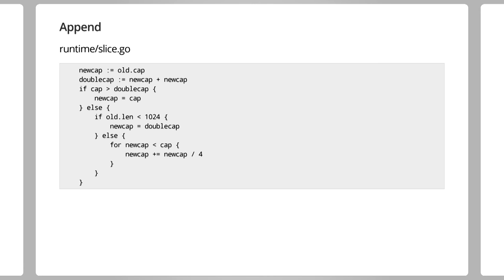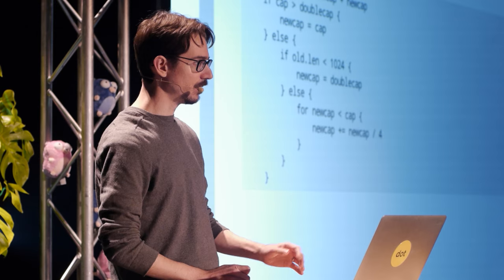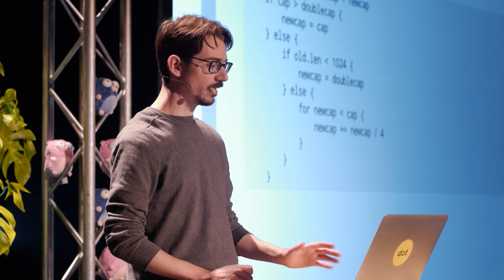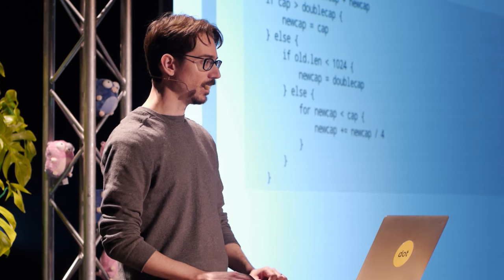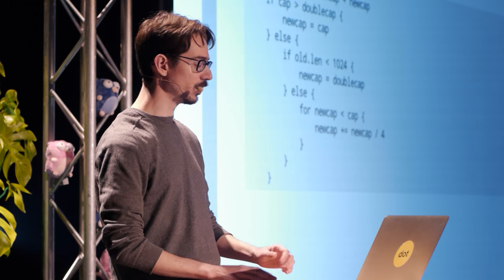You can also append to a slice. If there's space left, then the element you've added will just be tucked in at the end. Otherwise, a new chunk of memory will be allocated, the contents of the old slice will be copied over to the new one, and then your element will be added to the end. In order to keep this fast and basically amortized constant time, the capacity of the new slice that's allocated is twice the length of the old one.